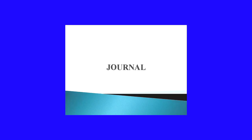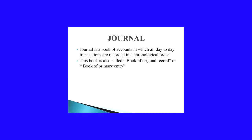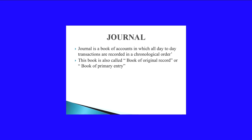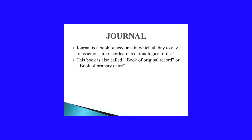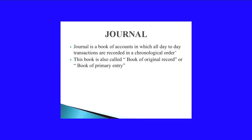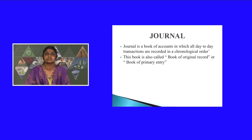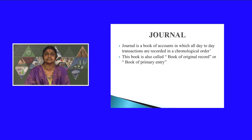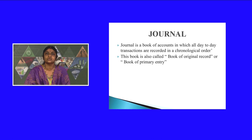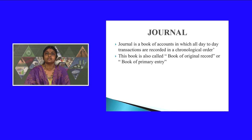Today we can start with a new chapter: Journal. The accounting process starts from this chapter. Journal is a book of accounts in which all day-to-day transactions are recorded in a chronological order, that is, in the order of dates. Transactions when recorded in the journal are known as entries — journal entries. Journal is also known as the book of original record or book of primary entry.